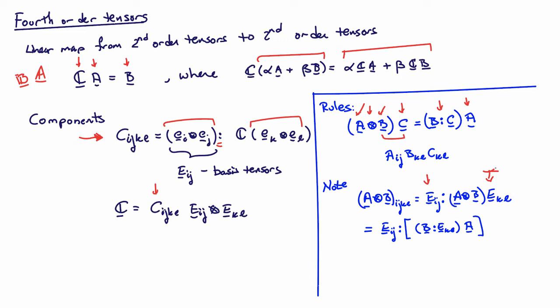Expanding this step by step: first consider the operation on E_KL, which gives B double-contracted with E_KL multiplied by A. That's just a number B_KL, and then I compute E_IJ double-contracted with A, which gives A_IJ. Swapping the order, the result is A_IJ B_KL. That's how you do that type of calculation.